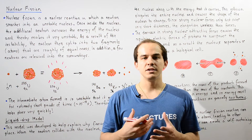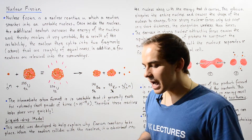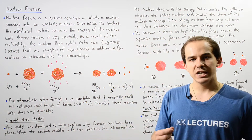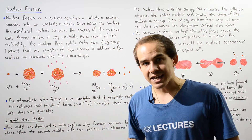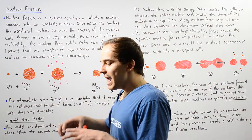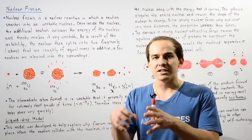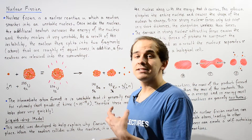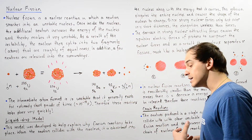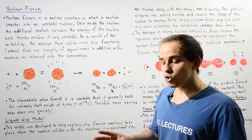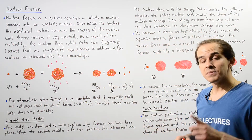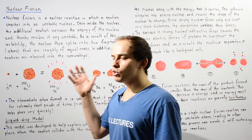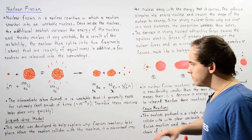In this lecture, let's examine one very common and important type of nuclear reaction: nuclear fission. Nuclear fission is a nuclear reaction in which a neutron collides or smashes into the nucleus of some unstable atom. As a result of this collision, the neutron combines with that nucleus, destabilizing it. The nucleus then dissociates or breaks down into two fragments of roughly equal mass, and several neutrons are released into the surroundings.